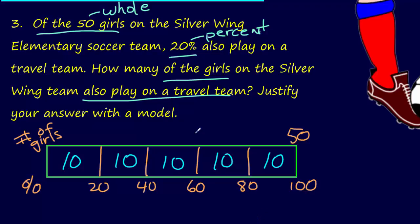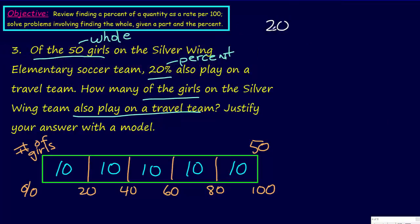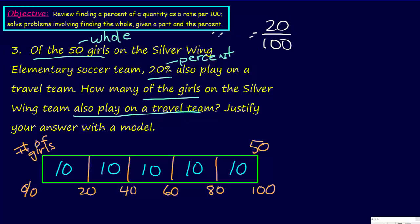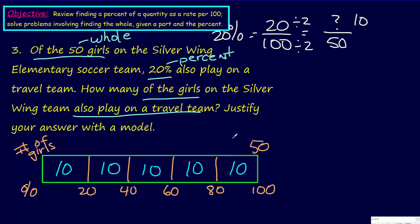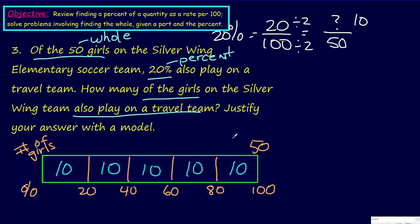We can check our work by doing the proportion. We had 20%, so 20 over 100 — that's the way it can be represented as a ratio. That equals our part over our whole of 50. Looking at it right away: 100 divided by 2 equals 50, so divide 20 by 2 and you get 10. That comes right back to our answer of 10. So 10 girls on the Silver Wing team also play on the travel team. Beautiful.